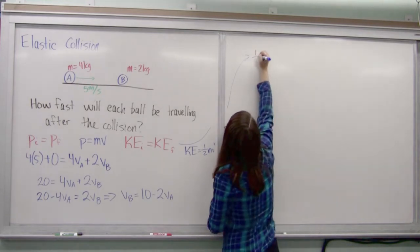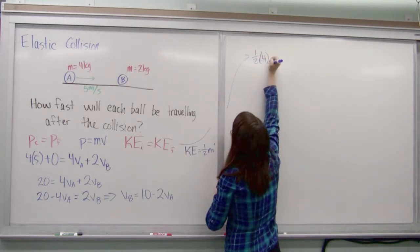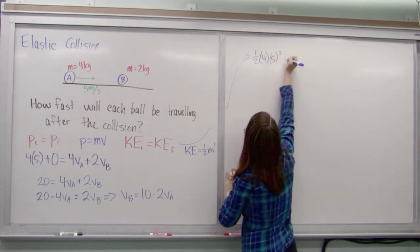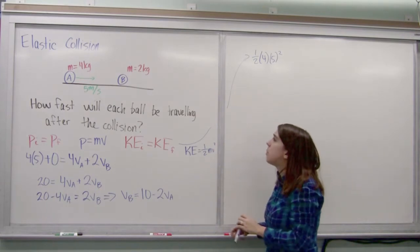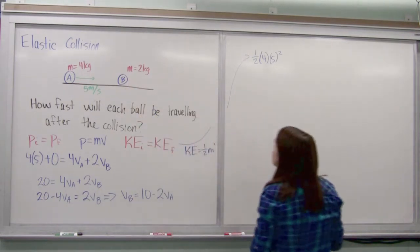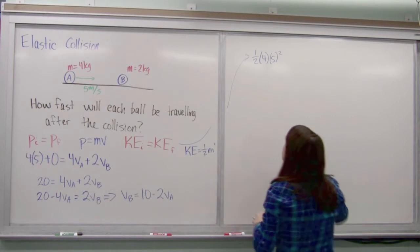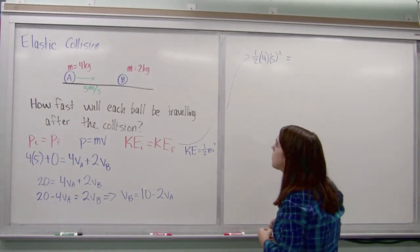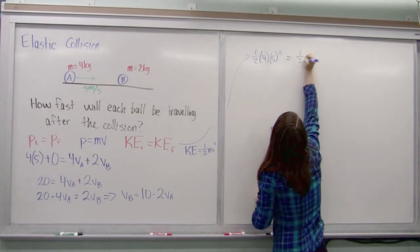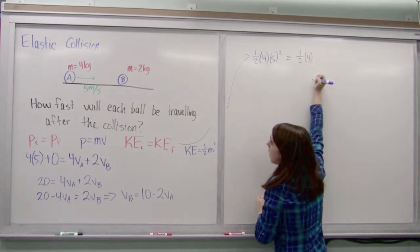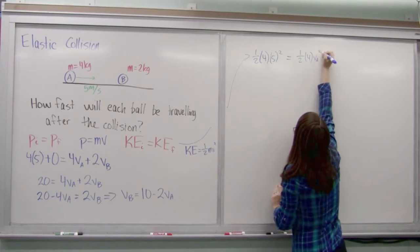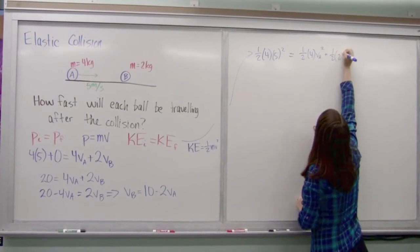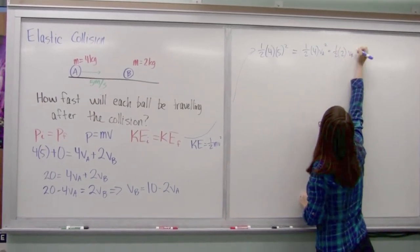it's going to be 1 half times the mass 4 times V squared that 5 squared plus the momentum of this one, which it's just sitting there so it doesn't have any momentum. So I can just go to final momentum. And presumably at the end, they'll both be moving. So I can go 1 half 4 times VA squared plus 1 half times 2 times VB squared.